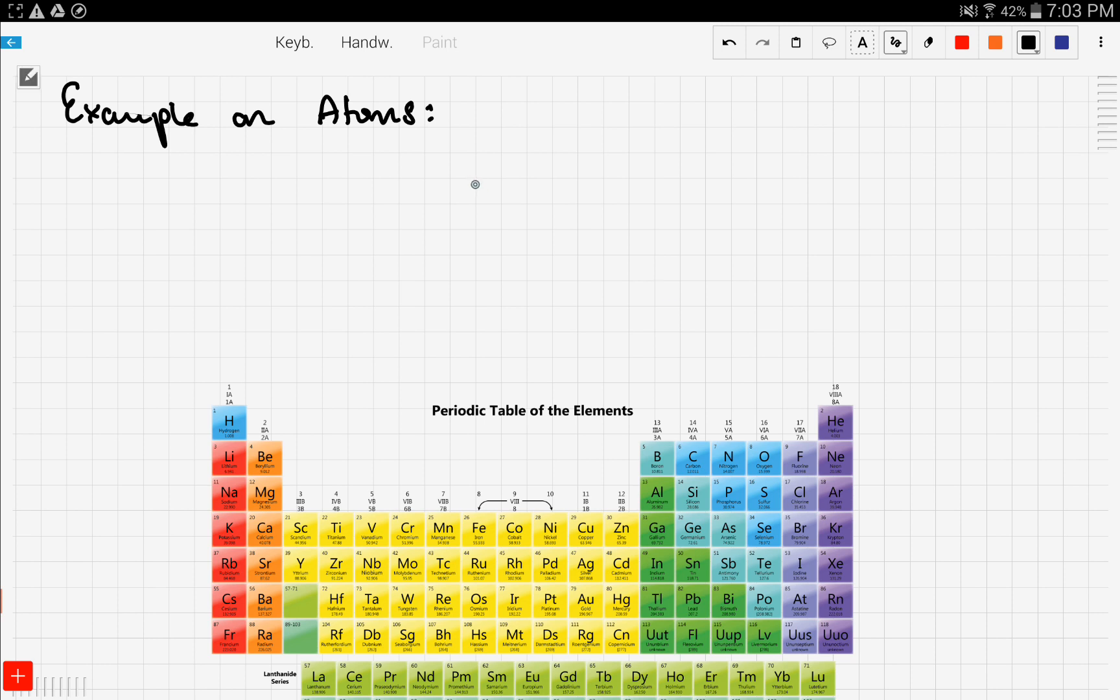If we have an element, let's say element X, we denote the atomic mass by A and the atomic number by Z. So the A is the atomic mass and the Z is the atomic number.